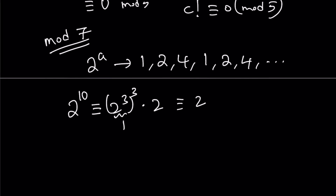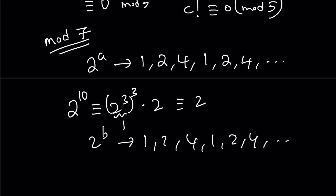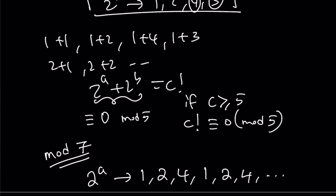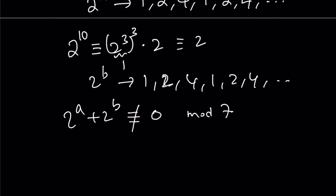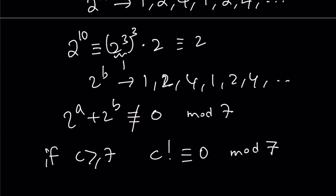So let's test this out. We have 2^a and 2^b with remainders from {1, 2, 4} mod 7. In mod 5 we could get 0, but in mod 7 we cannot — there's no way to pick two values from {1, 2, 4} that sum to a multiple of 7 (we'd need 3+4 or 2+5, which aren't available). This means 2^a + 2^b can never be 0 mod 7. But if c ≥ 7, then c factorial is divisible by 7 and is 0 mod 7. Therefore, for c ≥ 7 there are no solutions.